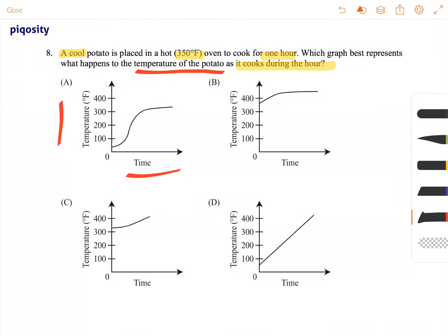If the potato is cool, we can draw the idea of what our graph is going to look like. If the potato is cool, it's going to start somewhere down here and then go up.